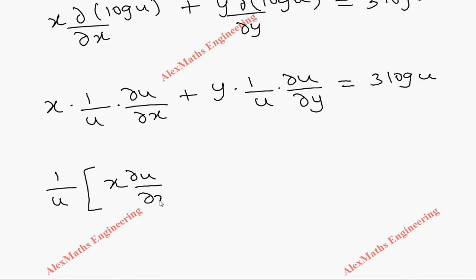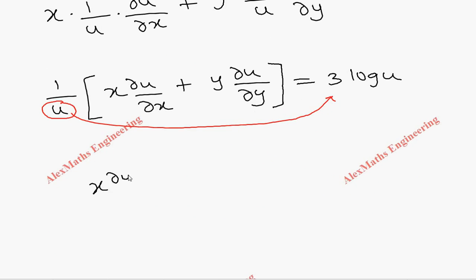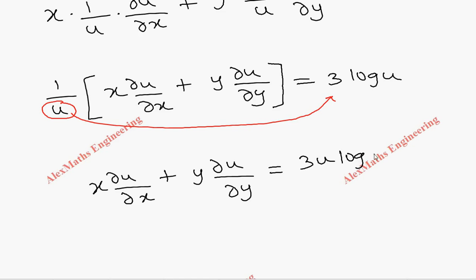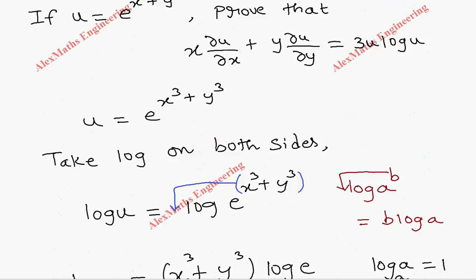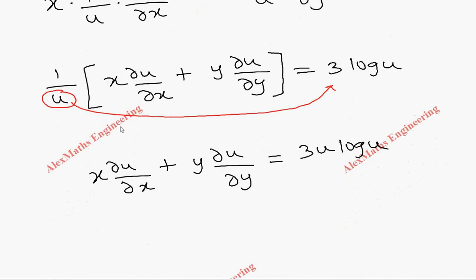We take 1/u common on the left side: (1/u) times (x times ∂u/∂x plus y times ∂u/∂y) equals 3 log u. Multiplying both sides by u, we get x times ∂u/∂x plus y times ∂u/∂y equals 3u log u. This matches exactly what the question asked us to prove, so by using Euler's theorem we have proved the required expression.